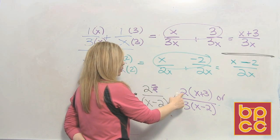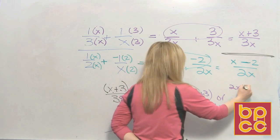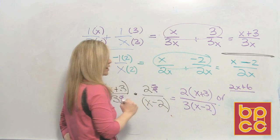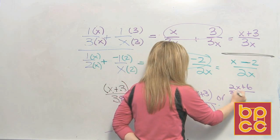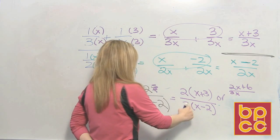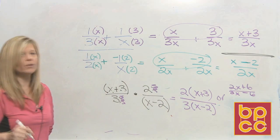We all know how to multiply. 2 times x is 2x. 2 times 3 is 6. That would be in the numerator, 2x plus 6. And the denominator, 3 times x is 3x. 3 times negative 2 is negative 6. So it's very important that you pay attention.